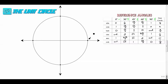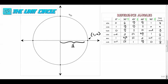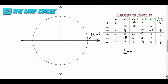Let's say we have on the unit circle our radius of one, which means this point is (1, 0). The tangent by definition — the tangent of an angle — is equal to the sine of that angle divided by the cosine of that angle.